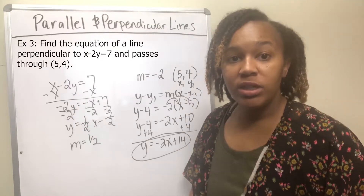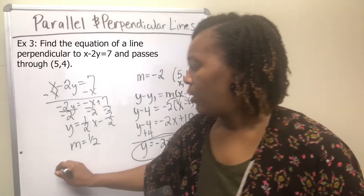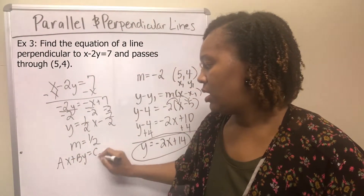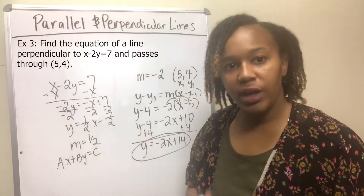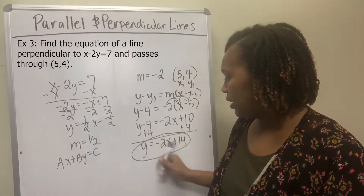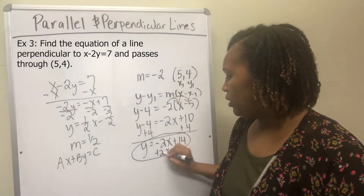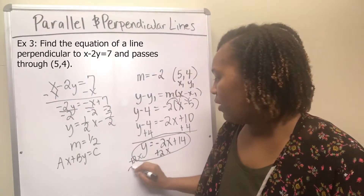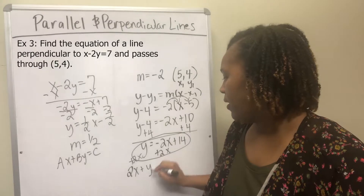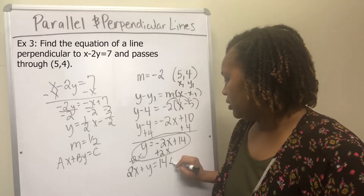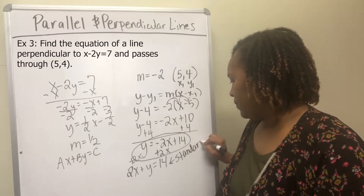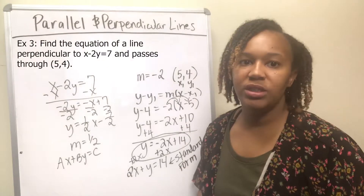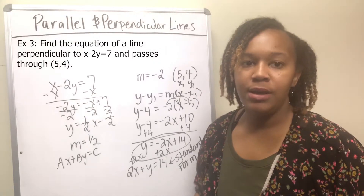If the problem asks you to write the equation in standard form — recall that standard form is ax + by = c, meaning x's and y's on the same side — you would add 2x to both sides of y = −2x + 14, giving 2x + y = 14. That is the standard form of the equation of the line.